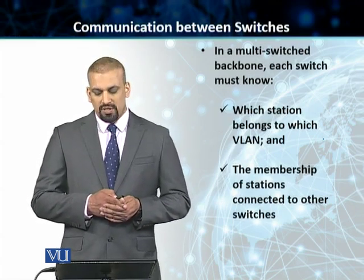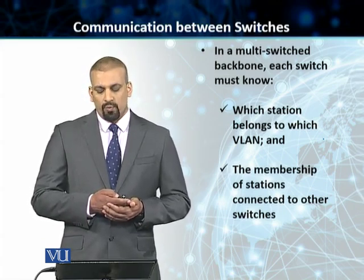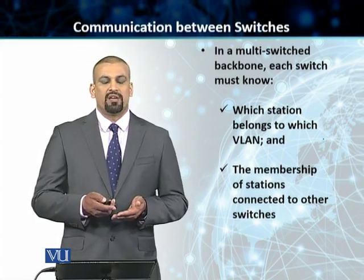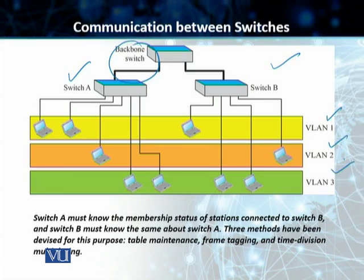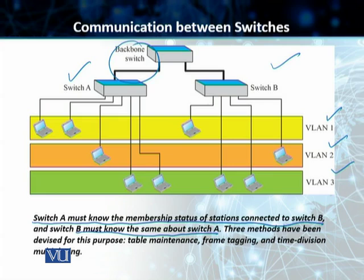Regarding communication between switches in a multi-switch backbone, each switch must know which station belongs to which particular VLAN, and also the membership of stations connected to all the other switches that make up a VLAN. The slide represents this concept: you have a backbone switch on top connecting two different switches — Switch A and Switch B — with VLANs 1, 2, and 3. Switch A must know the membership status of the stations connected to Switch B because they share virtual LANs, and vice versa.